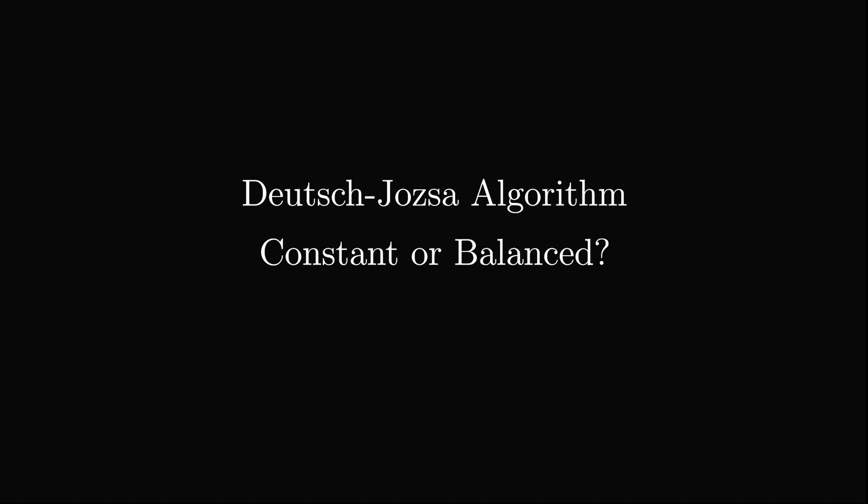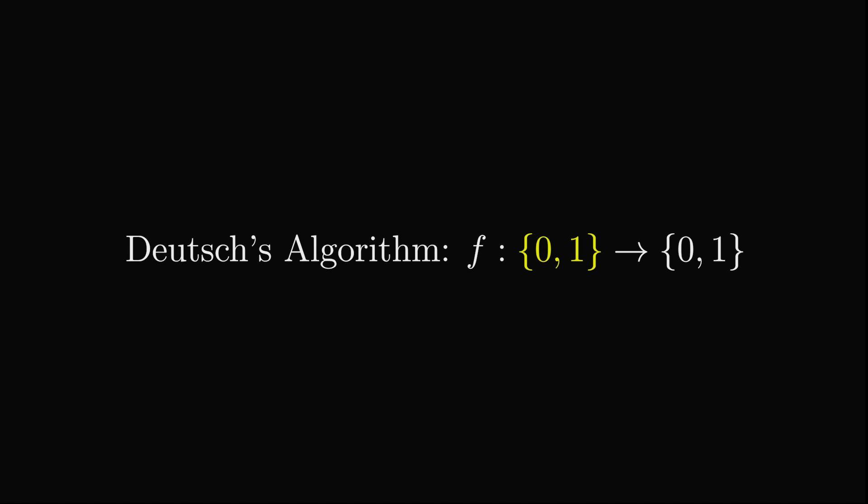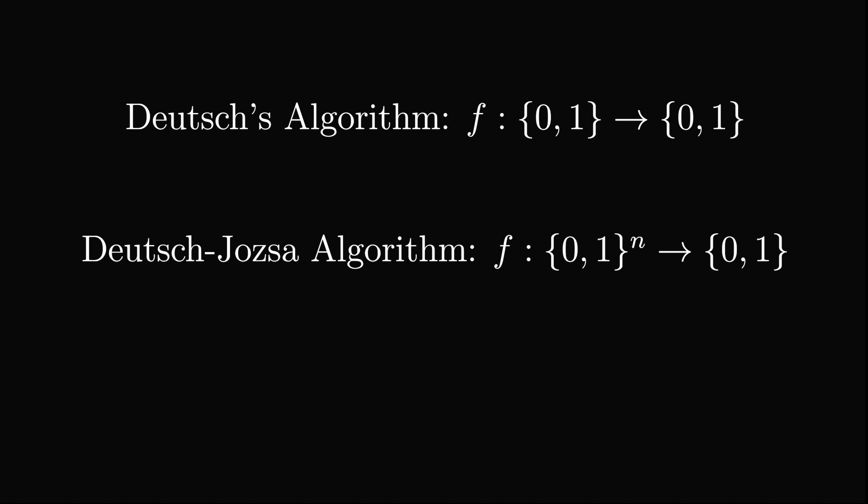The Deutsch-Jozsa algorithm concerns itself with the same problem as Deutsch's algorithm, trying to find out if a function f is constant or balanced. But instead of the function accepting one bit as input like in Deutsch's algorithm, the Deutsch-Jozsa algorithm is a general case that accepts any number of bits as input and still outputs one bit.